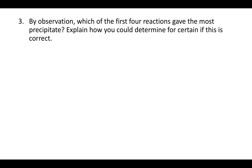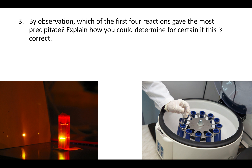The second part says: explain how you could determine for certain if this is correct. There are two ways to do this, though one is preferred. The preferred way, represented by the picture on the right, is to use a centrifuge. You take your solution — which was a mixture of liquid and small solid precipitate dots in the well — put it in a test tube in the centrifuge, spin it very fast, and that makes all the solid clump together at the bottom. After centrifuging, you decant the liquid and then weigh the solid precipitate, giving you a quantitative assessment of which solution produced the most precipitate.